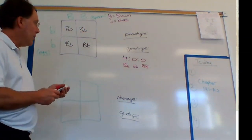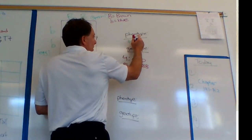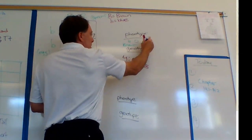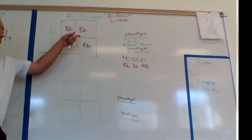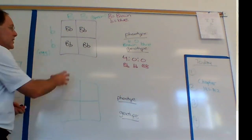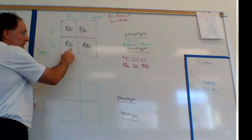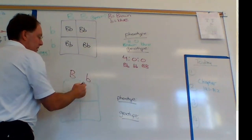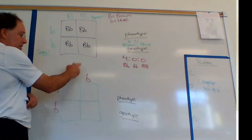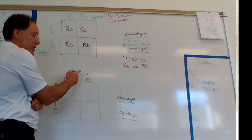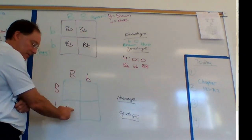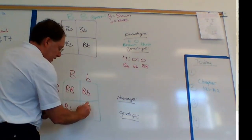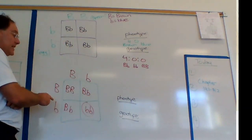What about the phenotype? It's going to be all brown-eyed — four brown-eyed children, zero blue-eyed. Now let's imagine if we took one of these heterozygous offspring, big B little b, and crossed them with another individual that also has big B little b. These are the genes potentially in sperm in order to create babies.